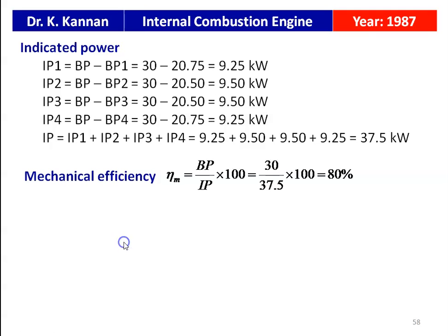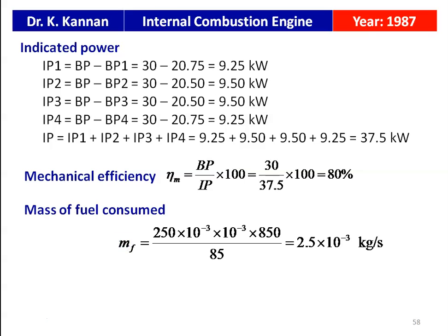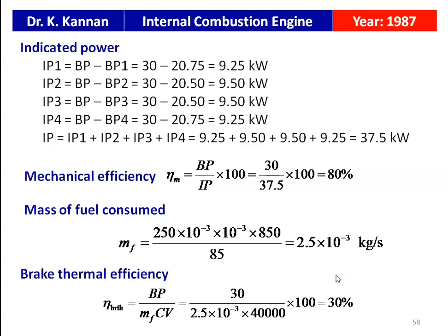Mechanical efficiency η_m = BP / IP × 100 = 30 / 37.5 × 100 = 80 percent. Mass flow rate of fuel: 250 ml = 250 × 10⁻⁶ m³; Mf = 250 × 10⁻⁶ × 850 / 85 = 2.5 × 10⁻³ kg/s. Brake thermal efficiency = BP / (Mf × CV) × 100 = 30 / (2.5 × 10⁻³ × 40,000) × 100 = 30 percent.